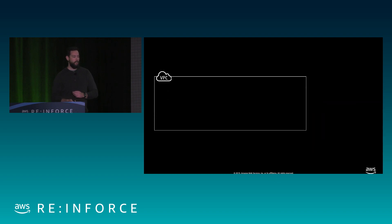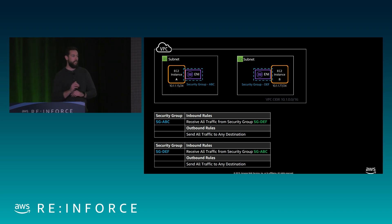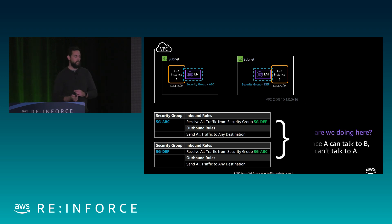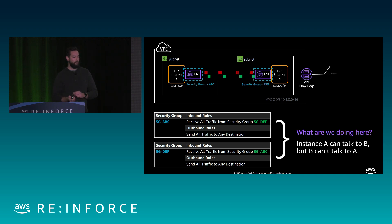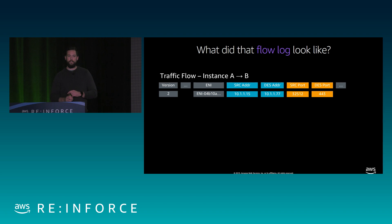Let's look at a simple example showing communication within a VPC. We've got two subnets, two EC2 instances, two ENIs, a couple of private addresses inside the VPC, and two security groups — ABC and DEF. The security groups reference each other and allow traffic between the two instances, so instance A and instance B can communicate with full two-way communications. The flow log entry shows the ENI, the source address 10.1.1.15, destination address 10.1.1.17, source port, destination port — and the action was accepted because it was allowed by the security group.